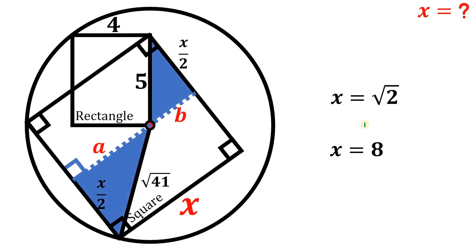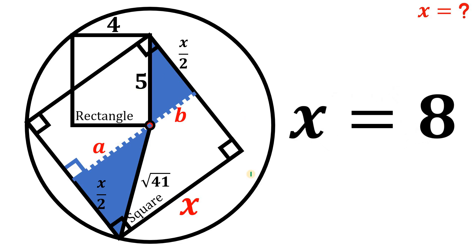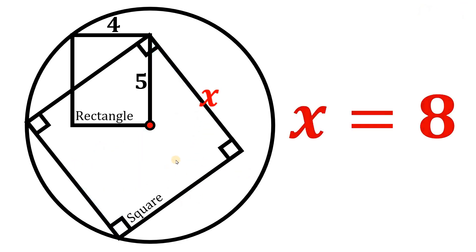Going back to our figure — which value is correct, square root of 2 or 8? Looking at the figure, notice that x, the side of the square, is technically greater than 5. Since the square root of 2 is less than 5, the only permissible value of x that satisfies this condition is x equals 8. This is our answer. Given this illustration, the value of x — the length of the side of the square — simply equals 8 units. And as always, we are done.